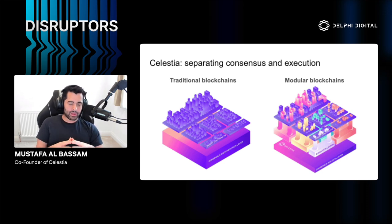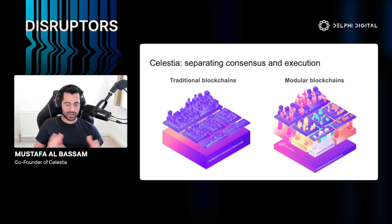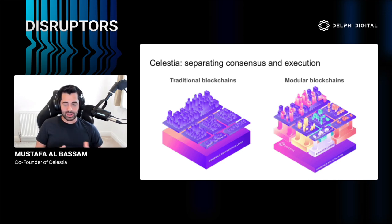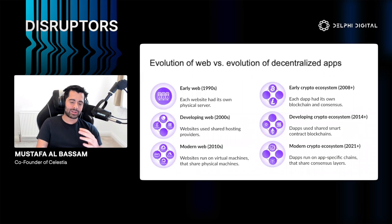Traditional blockchains are monolithic — they try to do everything. Bitcoin and Ethereum both do consensus and execution, and Ethereum also does smart contracts. If you want to use Ethereum for an application, Ethereum provides both the consensus and the computation. But in the modular blockchain stack, you can decouple consensus and execution. Instead of the consensus layer doing the execution, the execution happens off-chain or on a different chain — as we realized with the Bitcoin thought experiment.